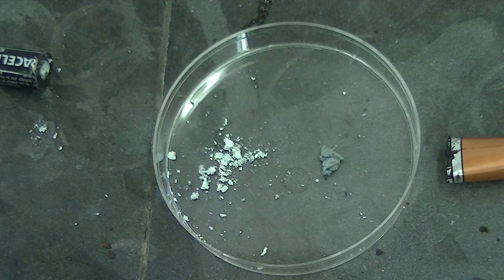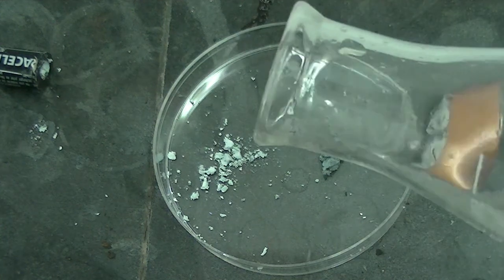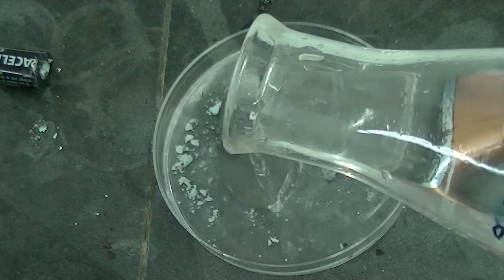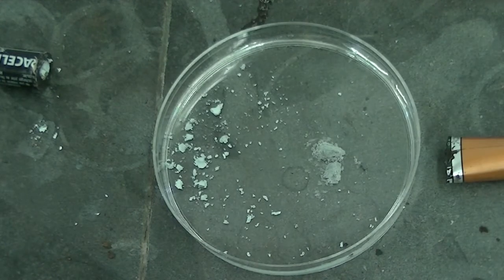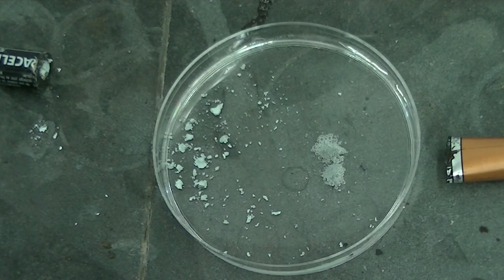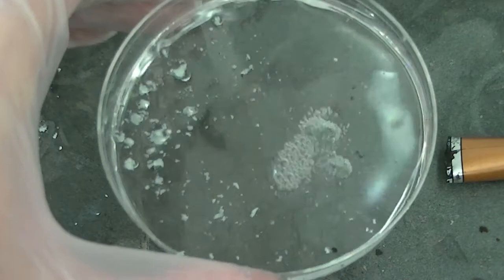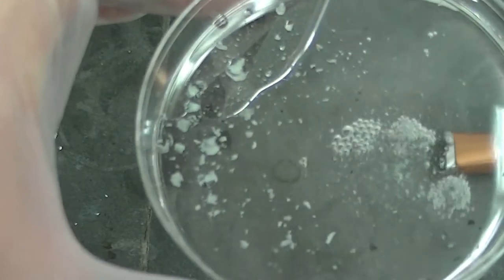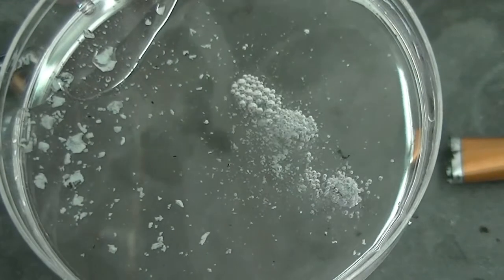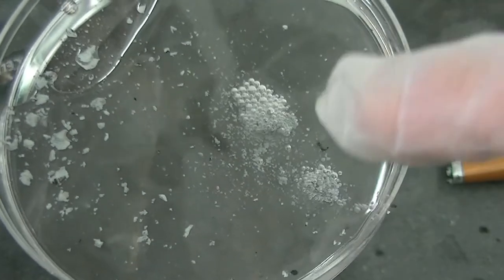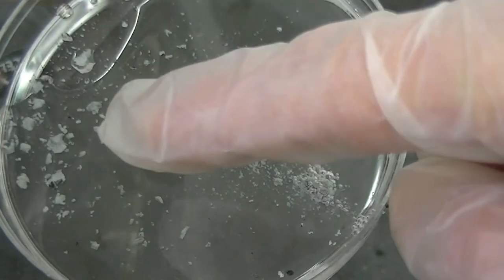We can do a chemical test to distinguish between zinc and zinc oxide. All I have to do is add a solution of hydrochloric acid. Hydrochloric acid reacts with zinc metal to form hydrogen gas. And I can certainly see hydrogen gas bubbles forming around the zinc metal. But I don't see any forming around the zinc oxide.